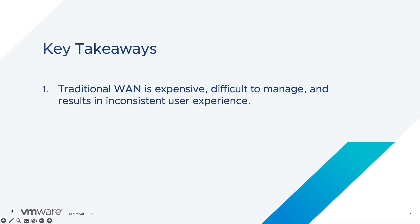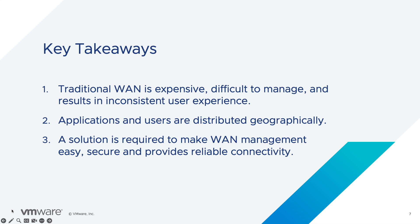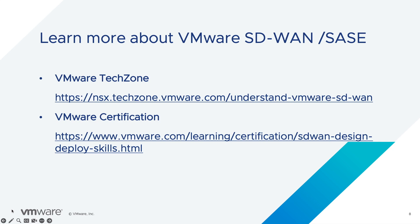Here are the key takeaways: traditional WAN architectures were expensive, difficult to manage, and did not provide a consistent remote user experience — it varied depending on where users and applications were located. Applications are no longer just in a physical on-premise environment; they are also in the cloud. To solve all these problems, you need a single solution that makes WAN management easy while providing automated, secure, and reliable connectivity no matter where users and applications are. Relevant documentation is attached to the module — do check it out.